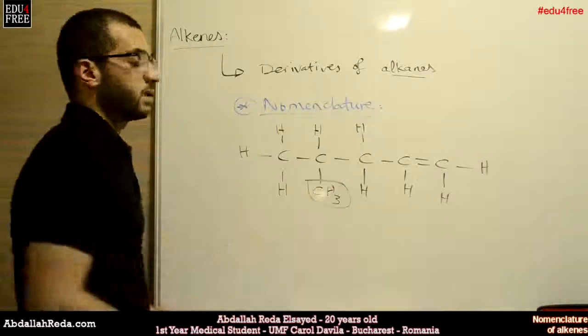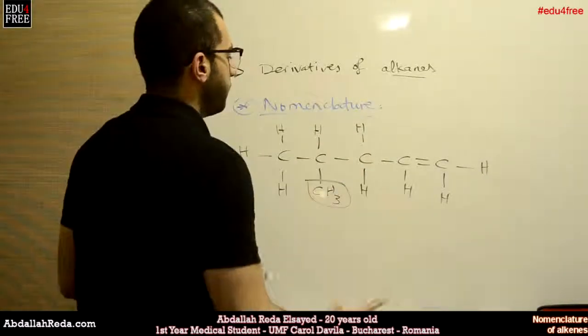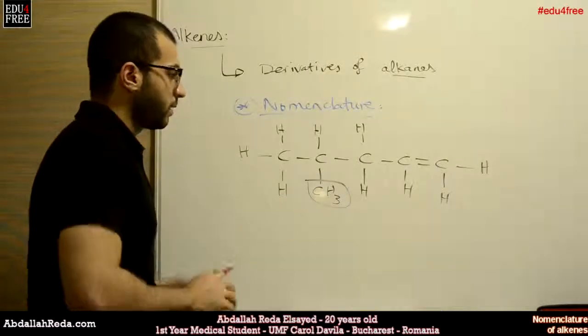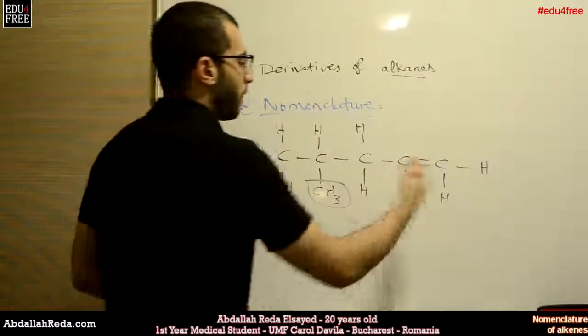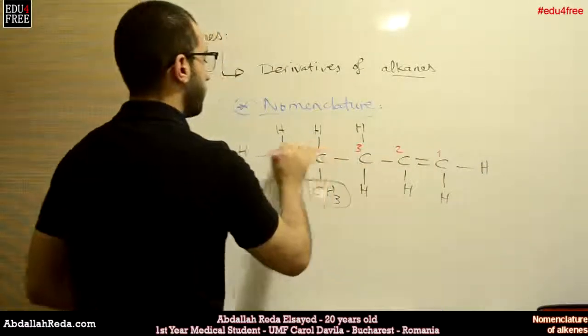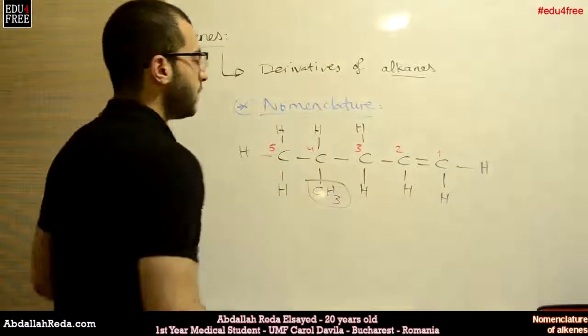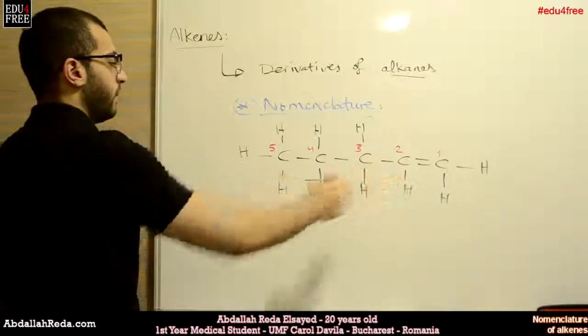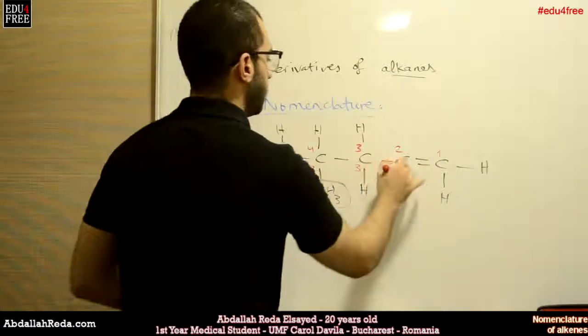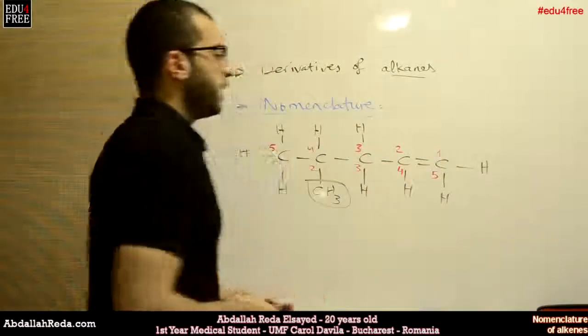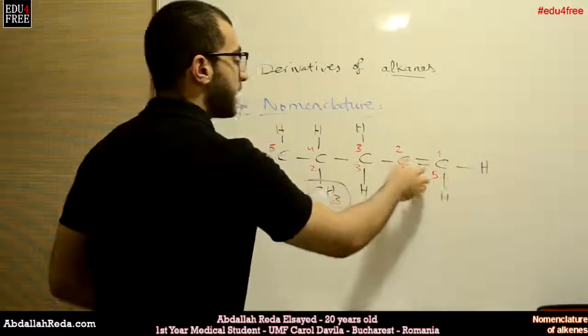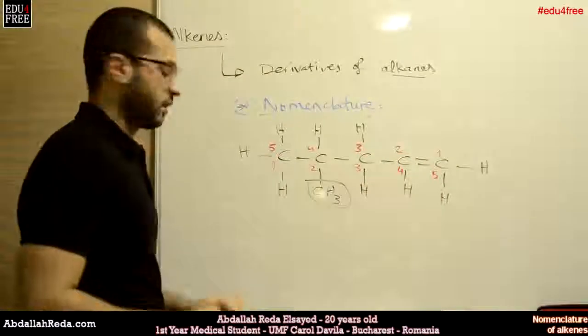Now, how to name this chain? First of all, we're gonna start to count the carbons from right to left: one, two, three, four, five. And we'll count them from the other direction: one, two, three, four, five. Then we will pick the numbers that will give the carbon atom that has the double bond the least value.